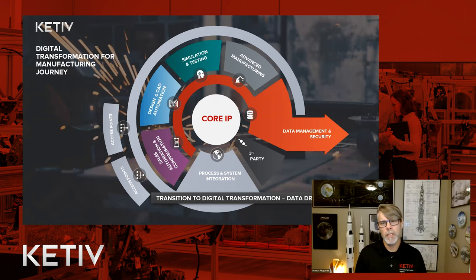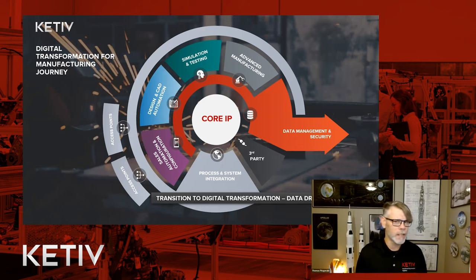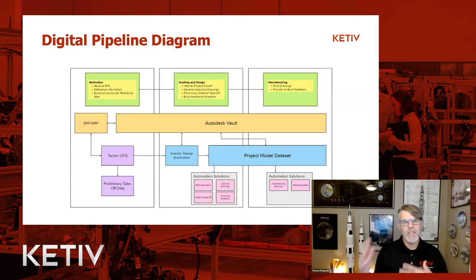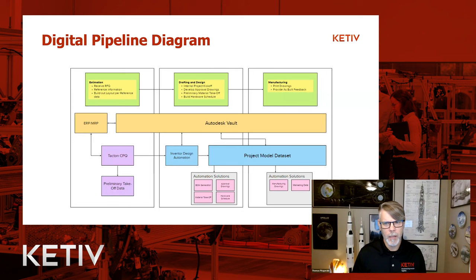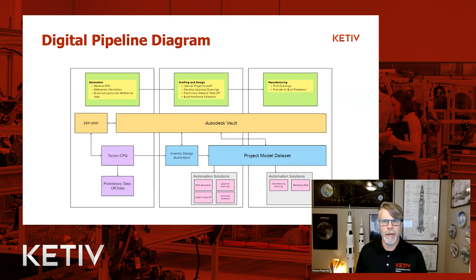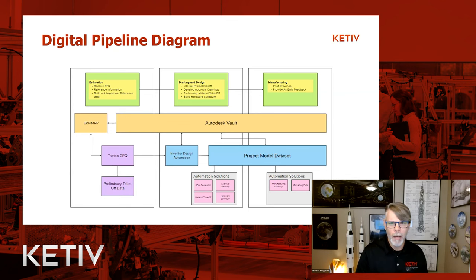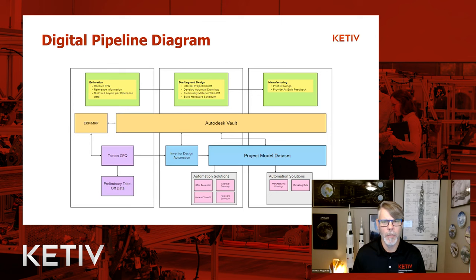The focus of all of this, if you look at this wagon wheel, is at the center: your IP — your intellectual property — the information that is making you successful as a business. This plays into the grand scheme of that digital pipeline, from estimating and receiving RFQs and building out reference information, to drafting, design, and ultimately out to manufacturing. These very distinct silos of where information is being produced and consumed feed into that next silo, creating that pipeline of information.